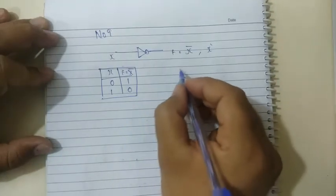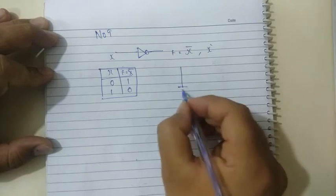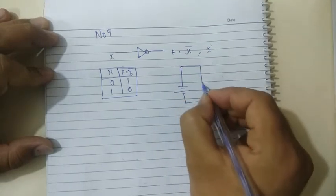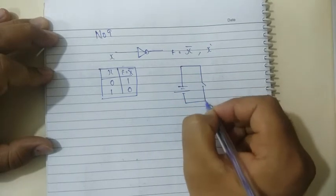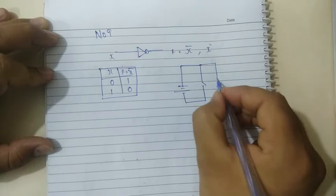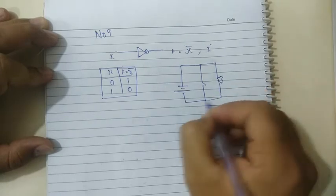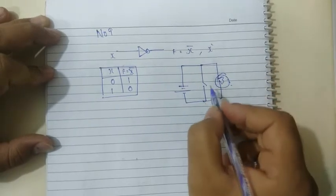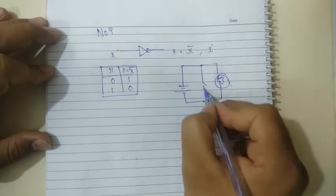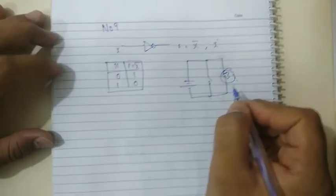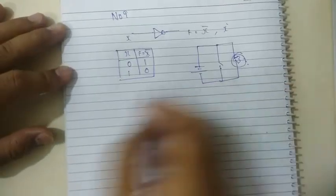For the electrical equivalent circuit of the NOT gate, the lamp will glow only when the switch is open. If the switch is closed, the lamp will not glow.